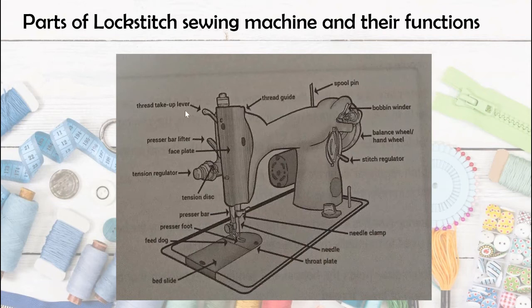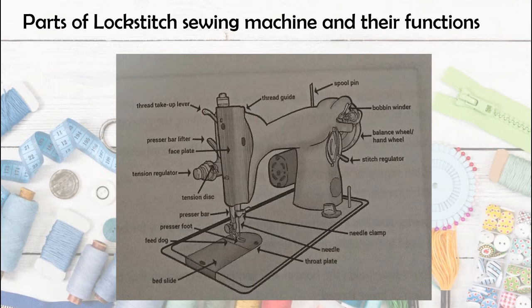The third part is the thread take-up lever — it is a lever that moves the thread up and down to form and tighten the stitch. After the thread guide, the thread goes to the thread take-up lever, and the thread is placed through its hole. It moves up and down. Once the needle has gone through the fabric, the thread take-up lever moves up and down to pull the thread and tighten or firm up the stitch.